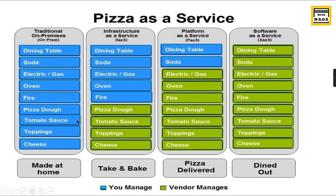When it becomes too complex, you decide to buy pizza dough, tomato sauce, toppings, and cheese from outside — take and bake. But you still use your own oven, gas, and dining table. You still do the preparation and development work. This is what Infrastructure as a Service is — the raw materials, in this case servers and virtual machines, are provided, but you still do the work.